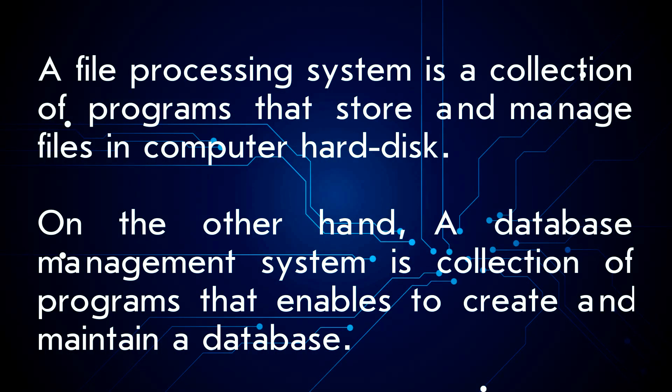A file processing system is a collection of programs that store and manage files in a computer hard disk. On the other hand, a database management system is a collection of programs that enables users to create and maintain a database.